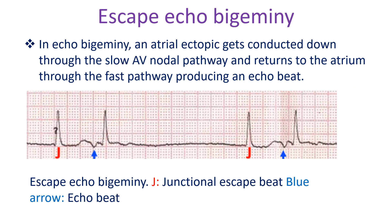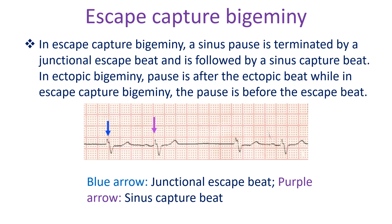In echo bigeminy, an atrial or junctional ectopic gets conducted down through the slow AV nodal pathway and returns to the atrium through the fast pathway, producing an echo beat. The echo beat has an inverted P wave in lead 2, indicating retrograde conduction to the atrium. A junctional beat has no P wave. In escape-capture bigeminy, a sinus pause is terminated by a junctional escape beat and is followed by a sinus capture beat. In ectopic bigeminy the pause is after the ectopic beat, while in escape-capture bigeminy the pause is before the escape beat.